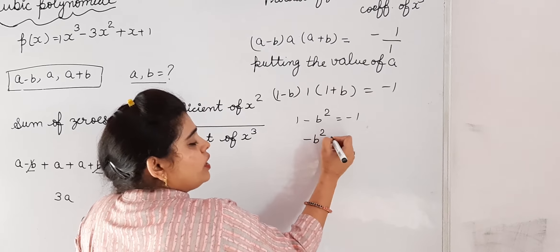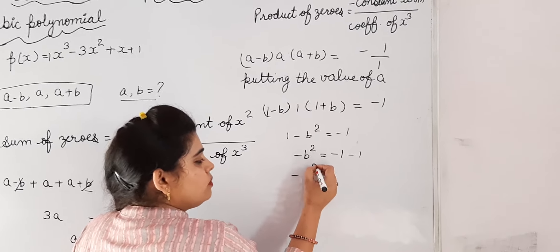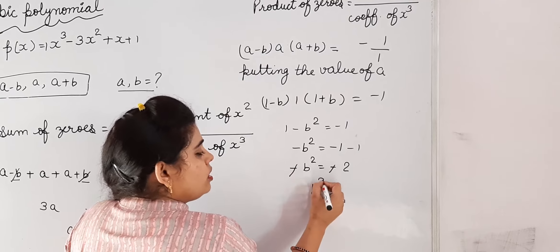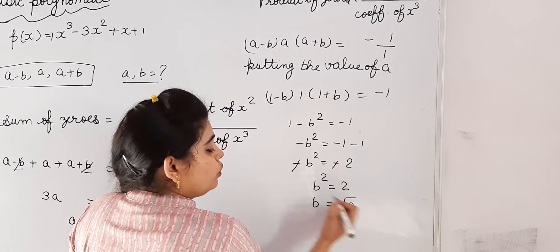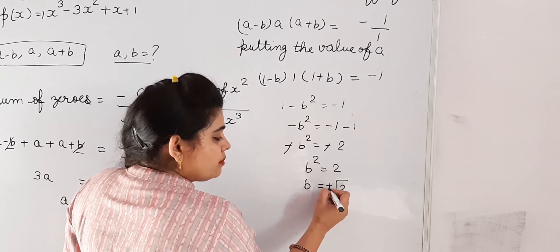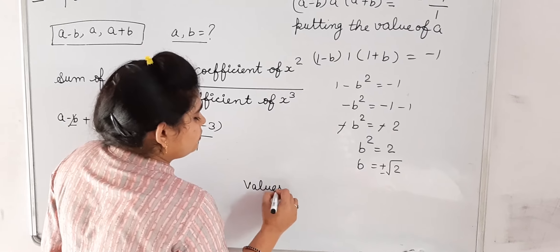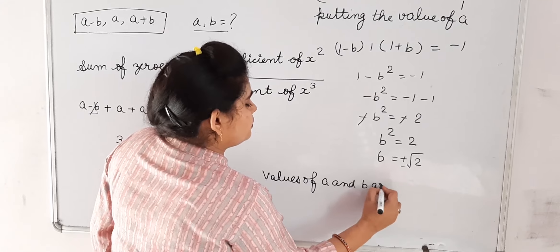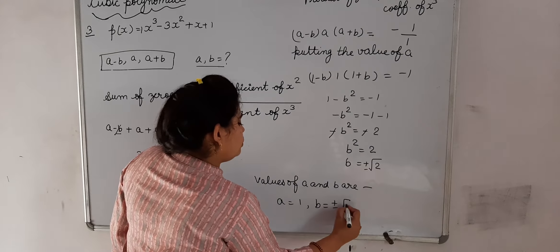So -b² = -1. Moving the +1 to the right side gives -b² = -2. The minus signs cancel out, so b² = 2, and b = √2. One more thing: plus-minus will come. Therefore, the values are a = 1 and b = ±√2. This is our answer.